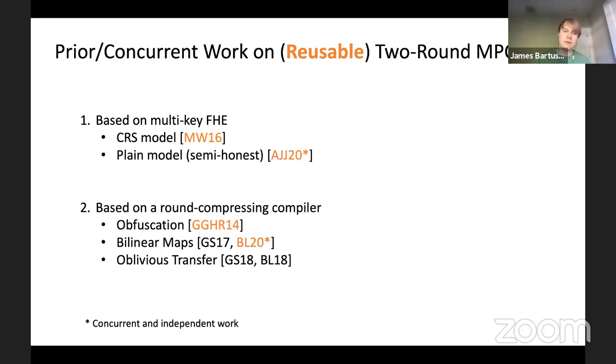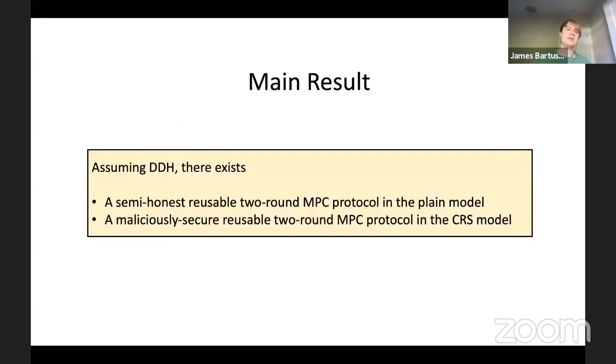Another concurrent independent work shows how to take this bilinear map approach and make it reusable. Our result fits in the second approach based on round compressing compilers. We show how to instantiate this using just the DDH assumption while maintaining reusability.